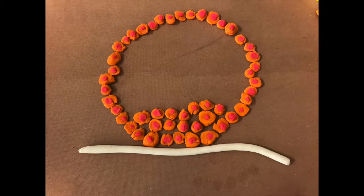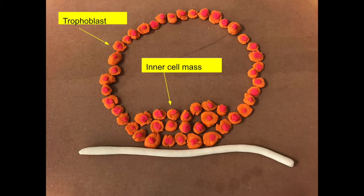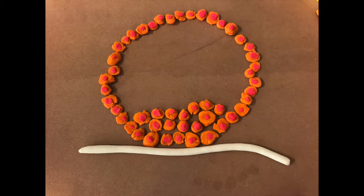A post-morula, pre-implantation mammal embryo that develops from a 32-cell stage into a fluid-filled hollow ball of over 100 cells is called a blastocyst. A blastocyst has two distinctive tissues: the outer layer of trophoblast, which gives rise to extra-embryonic tissues, and the inner cell mass, which gives rise to the embryonic disc and eventual embryo proper. First blastocysts occur within 148 hours, or approximately 6 days, after copulation.